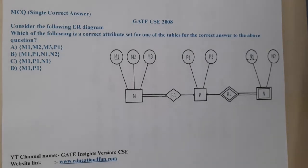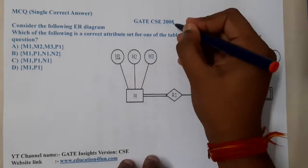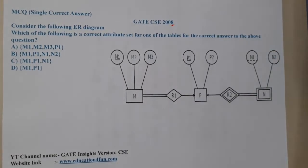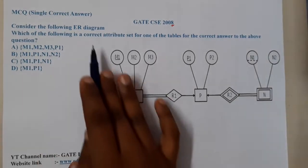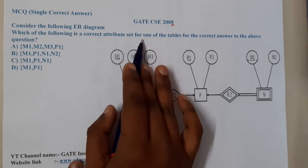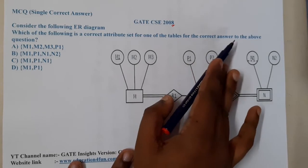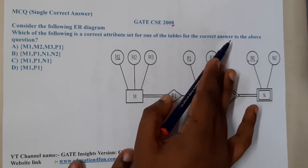Hello guys, we are back with our next lecture. In this lecture, let's go through the next question. This question belongs to GATE CSE 2008. The given question is: which of the following is a correct attribute set of one of the tables for the correct answer to the above question?